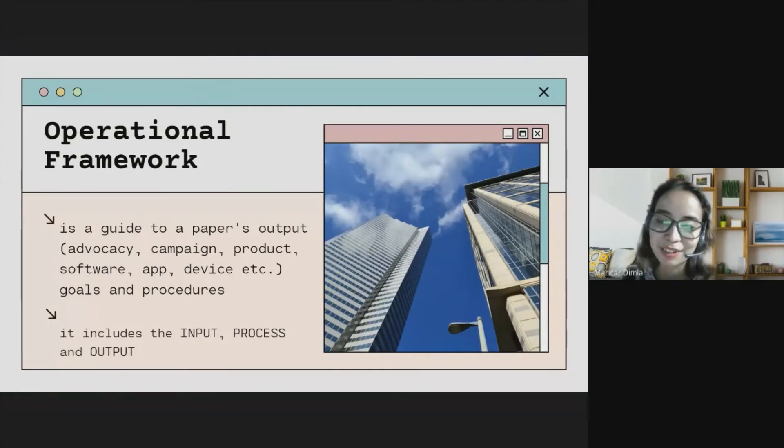Now we have the last framework. This will change our first understanding. Class, the operational framework is only exclusive if your study is an output-based in nature. I repeat, you'll be having an operational framework if your study is output-based. When we say output class, it can be an advocacy campaign, products, software, application, or even a device. The thing is, if after the research you have an output that will be derived, there you need an operational framework. The conceptual and theoretical framework are for the paper, the flow of the paper. While operational framework is for the output of your study.